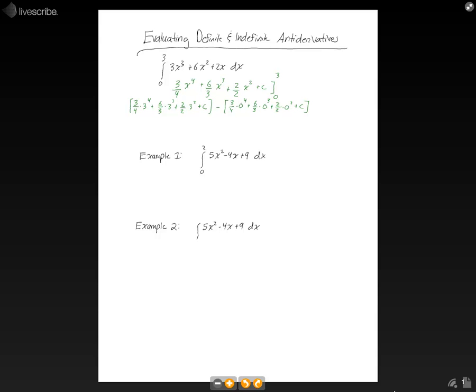Now, when we do our subtraction, that goes to 0, that goes to 0, that goes to 0, and that goes to 0. So now we just have to evaluate it here. And we will have 243 over 4 plus 54 plus 9 plus c minus c.